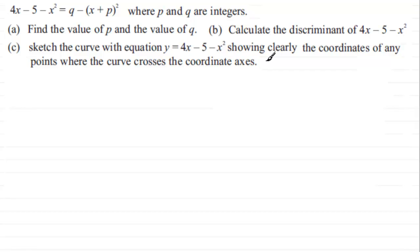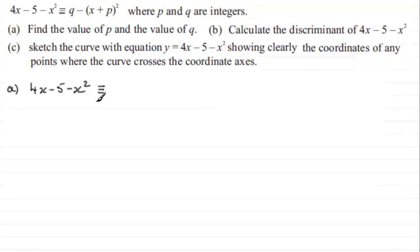For part a, they tell us that 4x minus 5 minus x squared can be written in this format. Now, this isn't really an equation — it's an identity, so it really should have a triple line (identical to) sign rather than an equals sign. This is a typical example on completing the square. Essentially, we've got a negative x squared here, and when dealing with these, you tend to put the minus outside a bracket.